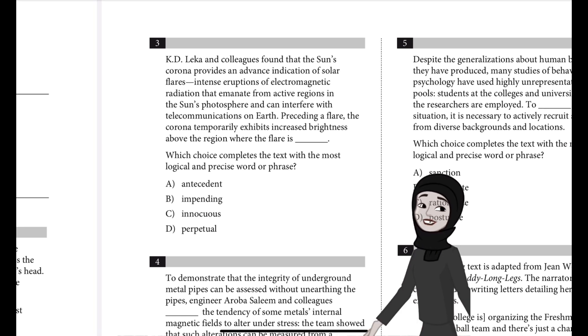K.D. Lekha and colleagues found that the sun's corona provides an advanced indication of solar flares, intense eruptions of electromagnetic radiation that emanate from active regions in the sun's photosphere and can interfere with telecommunications on Earth.